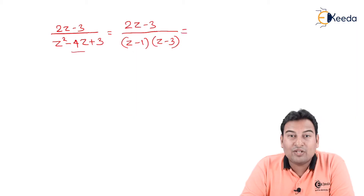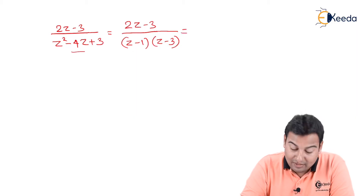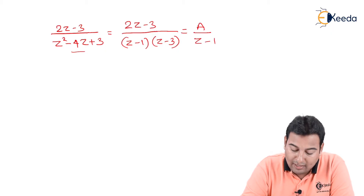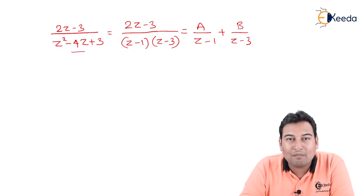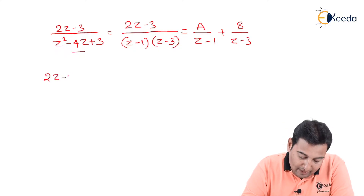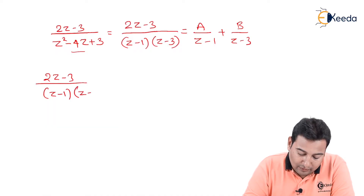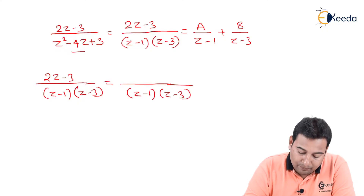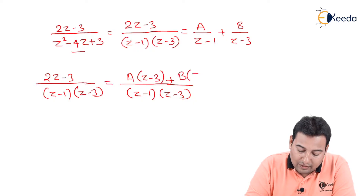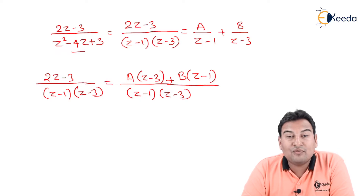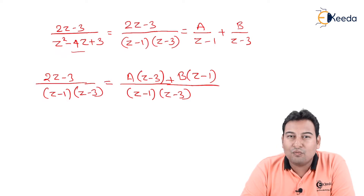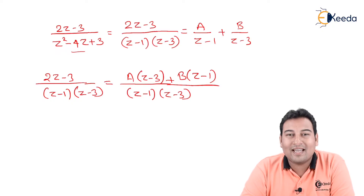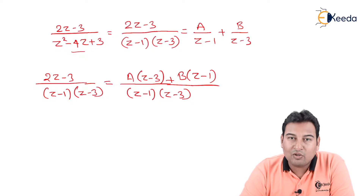Now let us separate using partial fractions. Both factors are linear — z minus one and z minus three — so we write it as A upon (z minus one) plus B upon (z minus three). Let us find A and B. Taking LCM as (z minus one)(z minus three), we get A(z minus three) plus B(z minus one). We have seen two methods: substitution and expand-and-equate. Here we'll be using substitution.